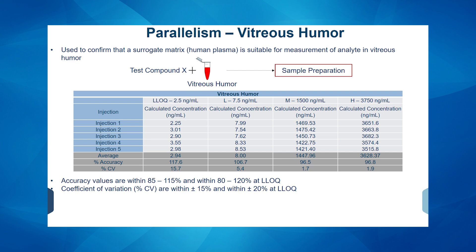Parallelism study — this study is very key when using a surrogate matrix, as it determines whether your surrogate matrix is actually suitable to quantitate the analyte of interest. We conducted a parallelism study comparing the response from quality control samples in human plasma versus quality control samples created in vitreous humor. We had four different quality control samples prepared in vitreous humor, and we looked at the accuracy and percent CV. They were all within the acceptance criteria per ICH-M10 guidelines.